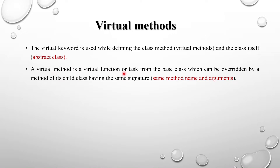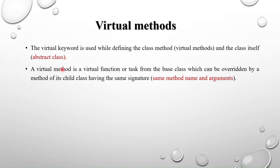A virtual method is a virtual function or task from the base class which can be overridden by the method of its child class having the same signature. Same signature means the same method name and the same number of arguments. We will see the difference between using the virtual keyword and not using it.